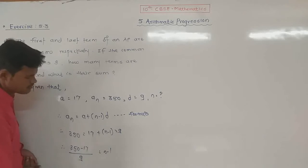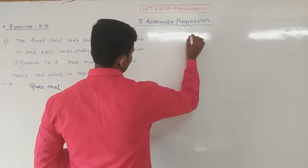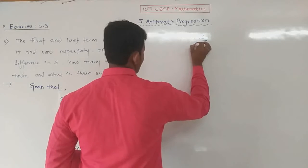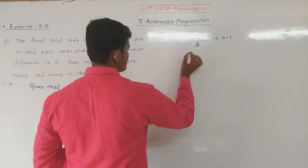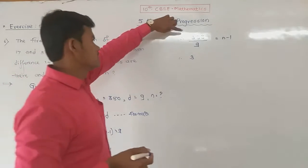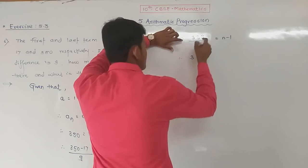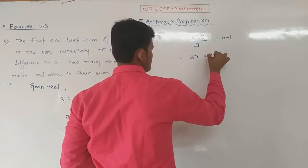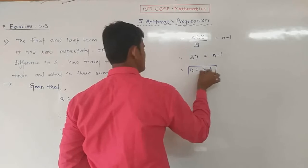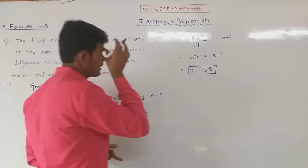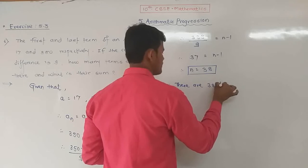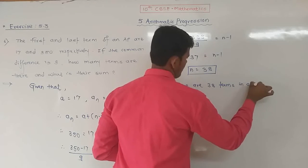So 350 minus 17 is 333, divided by 9 equals N minus 1. 9 times 37 is 333, so N minus 1 = 37, giving N = 38. That means there are 38 terms in that AP.